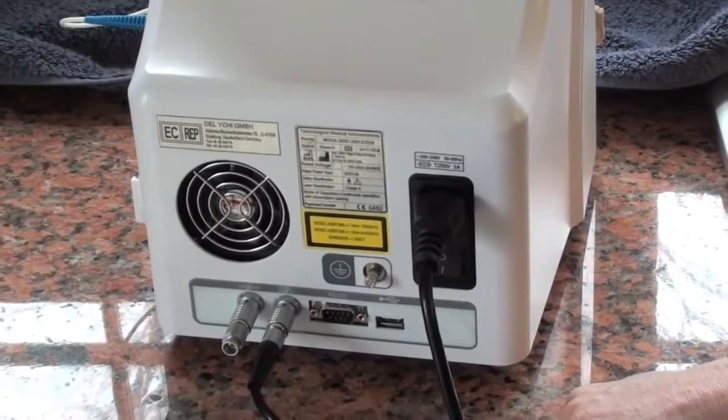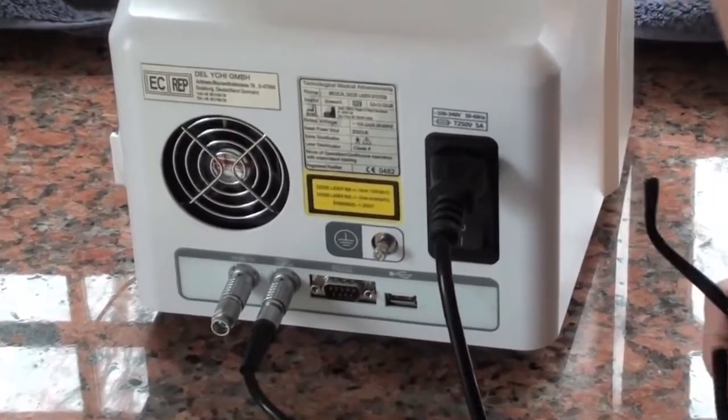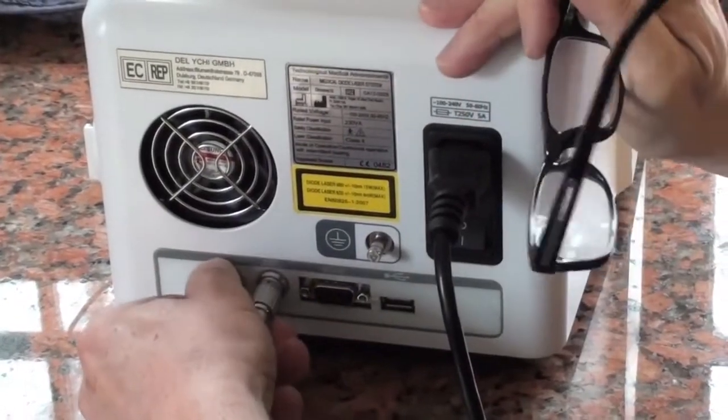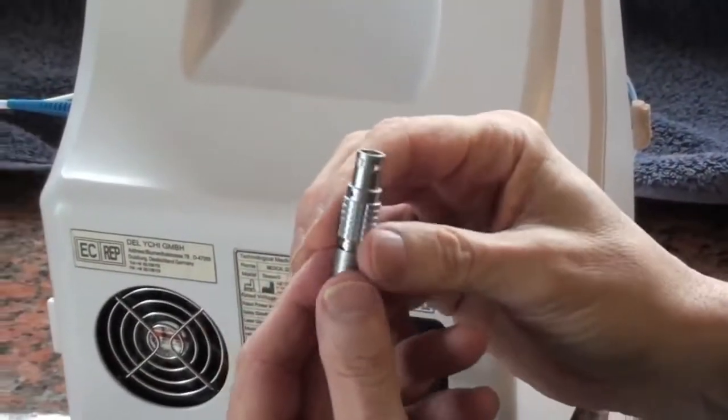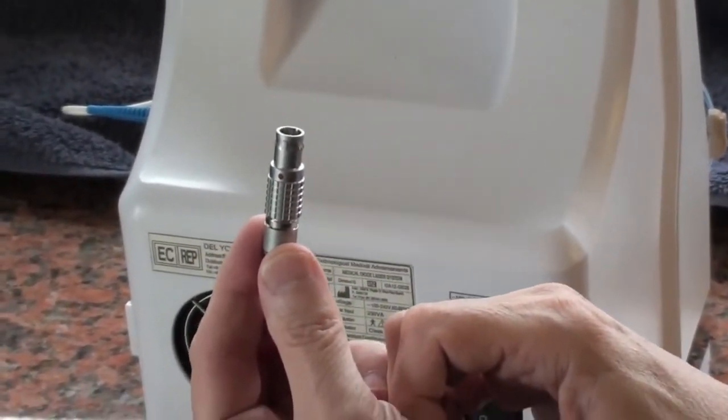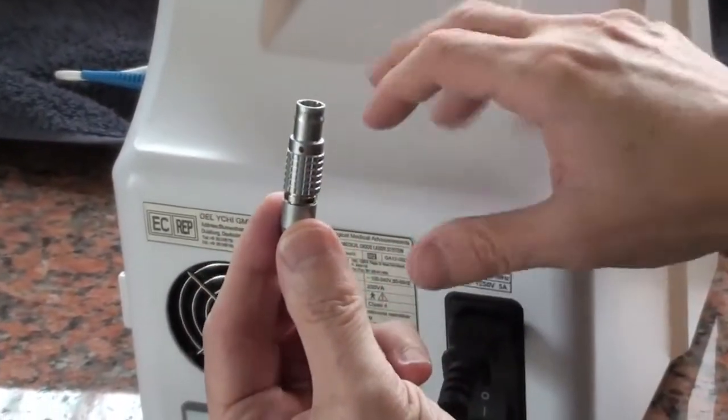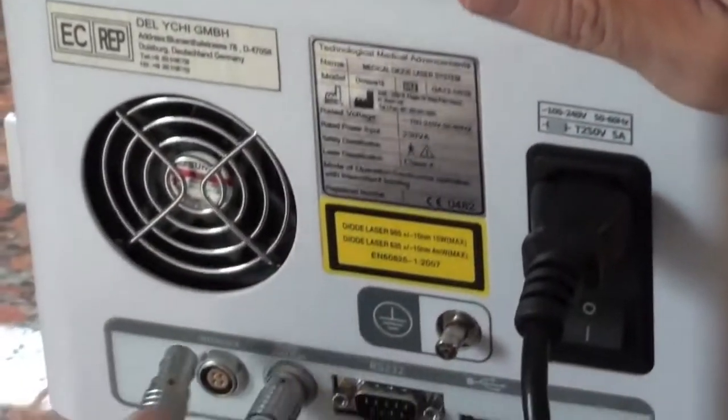The first thing we do is this is called the interlock, and the interlock is the key to the laser. Without this you cannot operate the laser. When you plug anything into this unit it must be turned off, and two, you put it in gently. You never force anything.